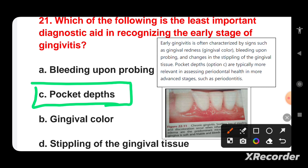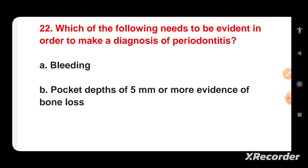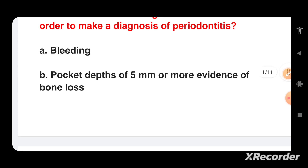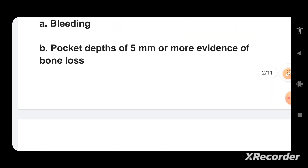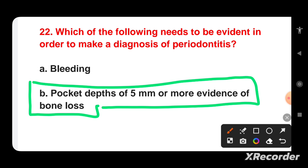Which of the following needs to be evident to make a diagnosis of periodontitis? Options are: bleeding, pocket depth of 5 mm or more, evidence of bone loss radiographic, or a change in tissue color and tone. Periodontitis involves inflammation of the supporting structures of the teeth including bone loss. The presence of pocket depth of 5 mm or more along with evidence of bone loss is the key diagnostic feature.